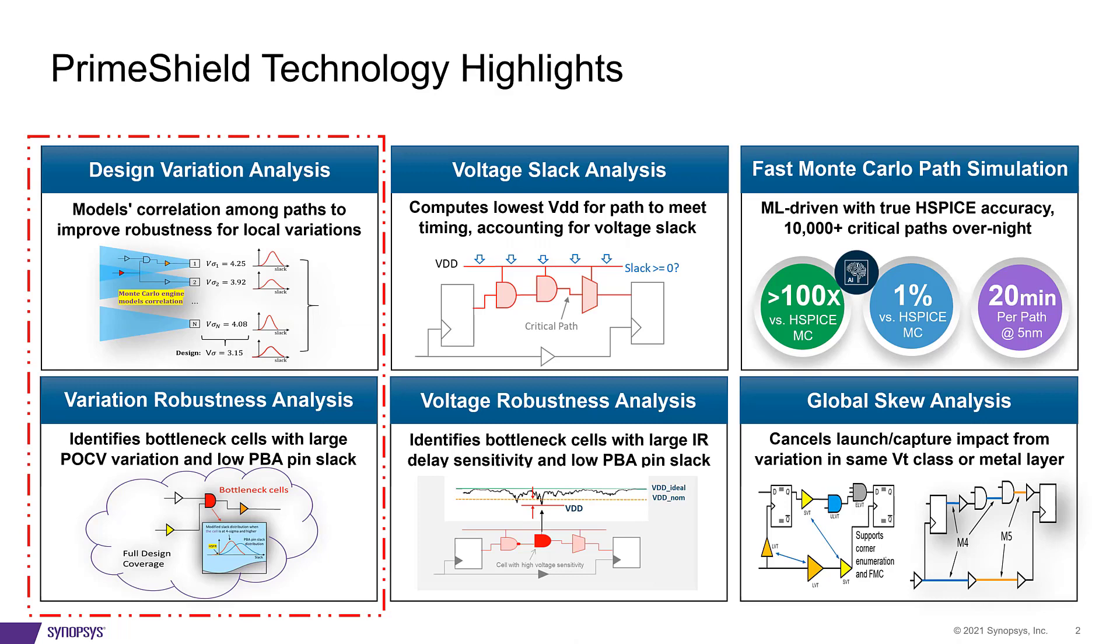The DVA feature checks design level robustness based on user provided paths. It helps to model the design's WNS distribution based on local variation.